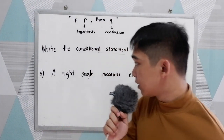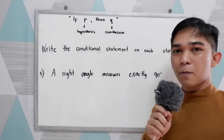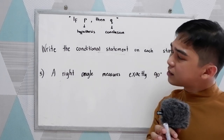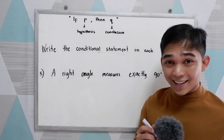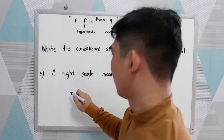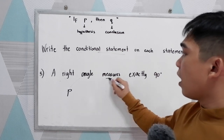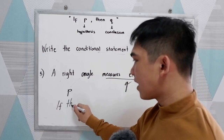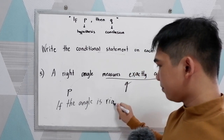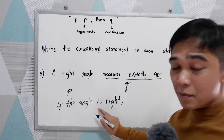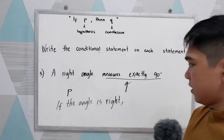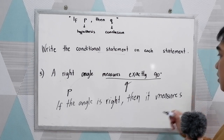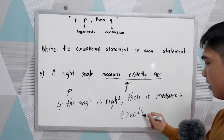Our last and fifth statement is: 'A right angle measures exactly 90 degrees.' The hypothesis (P) is 'right angle,' and the conclusion (Q) is 'measures 90 degrees.' Writing it as a conditional statement: 'If the angle is right' — we use 'is' because we are talking about a singular angle — 'then it measures exactly 90 degrees.'